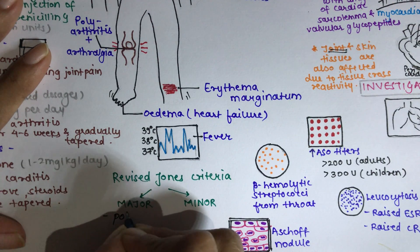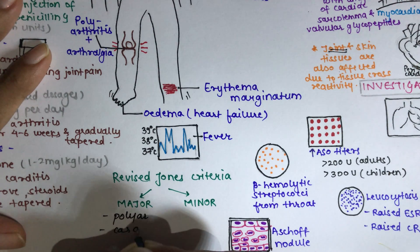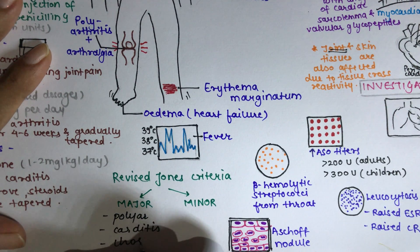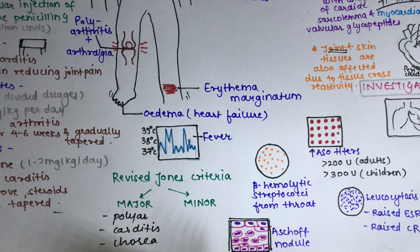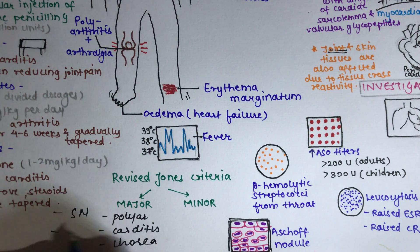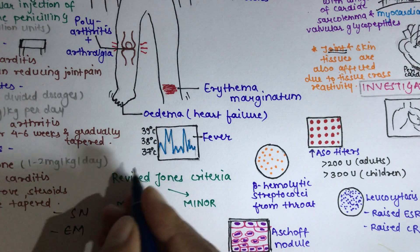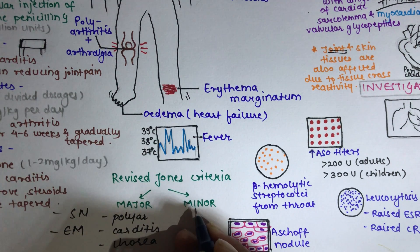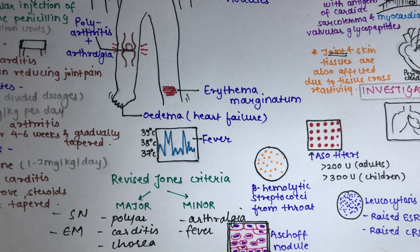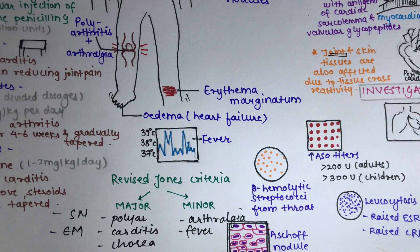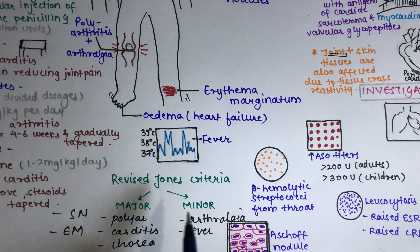The major criteria of the Jones criteria are: polyarthritis, carditis, chorea, subcutaneous nodules, and erythema marginatum. The minor criteria are: fever, arthralgia, raised ESR or CRP, leukocytosis, and prolonged PR interval.